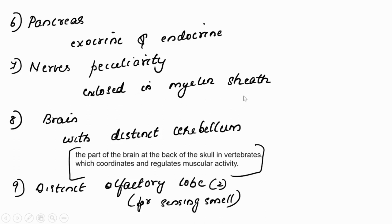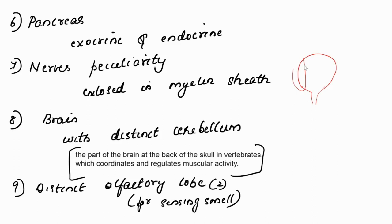The nerves in Gnathostomata are enclosed in a myelin sheath, which speeds up nerve impulse conduction. Regarding the brain, a distinct cerebellum is present. The cerebellum is the part at the back of the skull that coordinates and regulates muscular activity. Distinct olfactory lobes are present — two in number — for sensing smell.